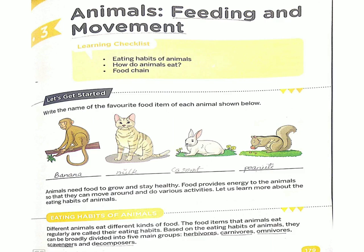Animals need food to grow and stay healthy. Animals ko grow karne ke liye and healthy rehne ke liye food chahiye hota hai, jaise humhe chahiye hota hai. Food provides energy to the animals so that they can move around and do various activities — woh idhar udhar ja sakte hain, woh apna koi bhi work easily kar sakte hain.